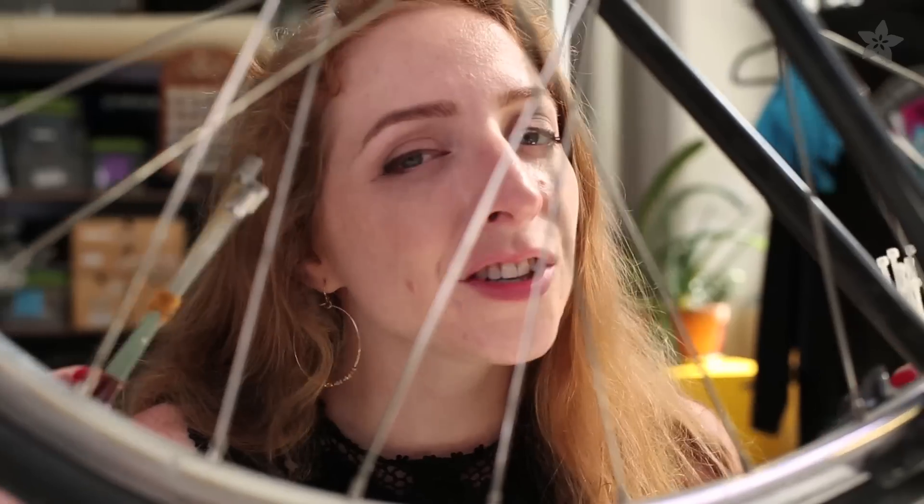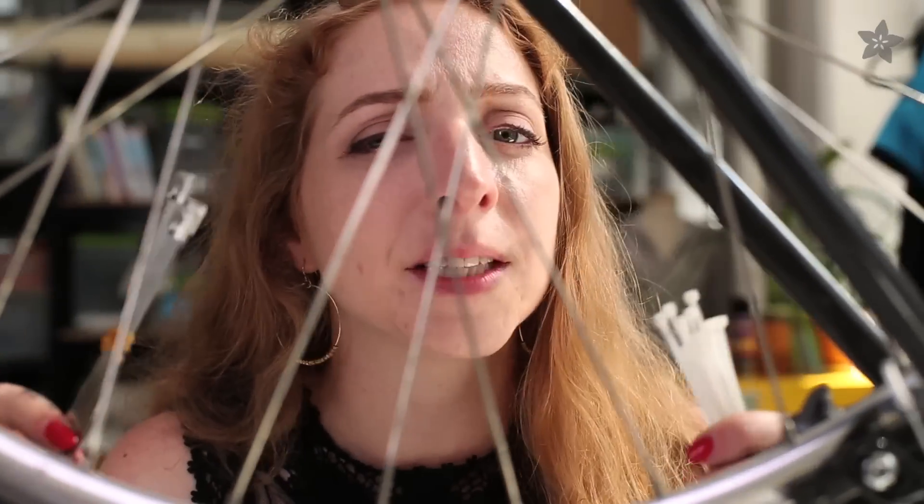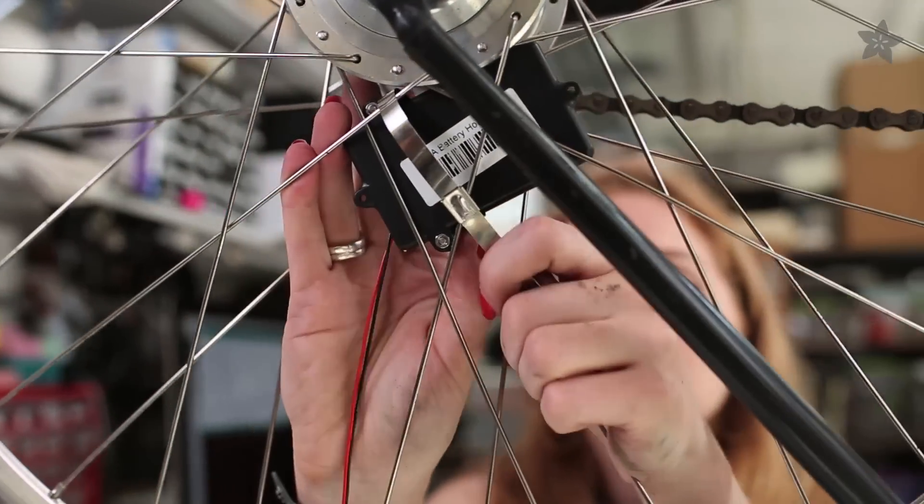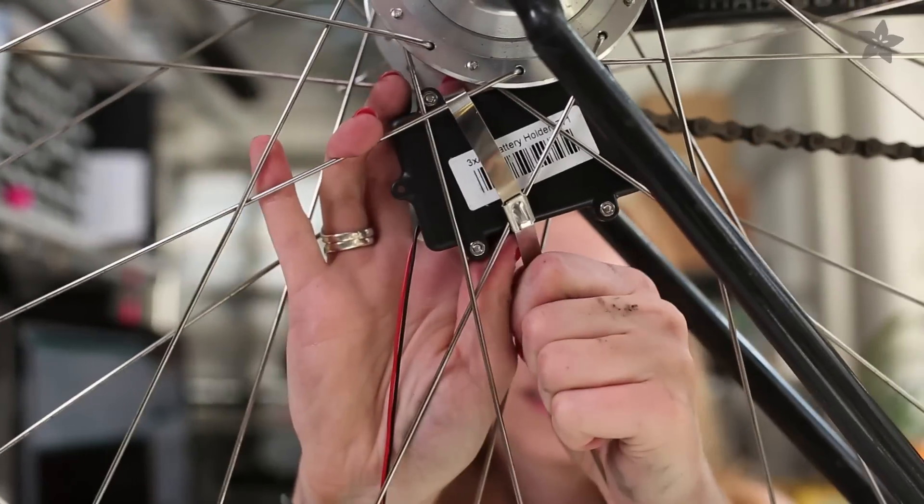If you ask me, attaching the circuit to the bike is the hardest part of this project to do well, if only because your safety depends on it. Use stainless steel zip ties for anchoring the heavy battery pack as close to the wheel hub as possible. Plastic ties work fine for the LEDs and Trinket.